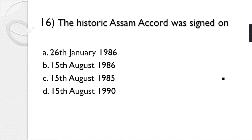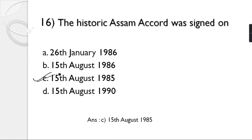Question number 16: The historic Assam Accord was signed on which date? Options: 26th January 1986, 15th August 1986, 15th August 1985, 15th August 1990. The correct answer is option C — 15th August 1985.